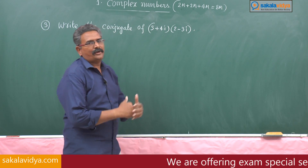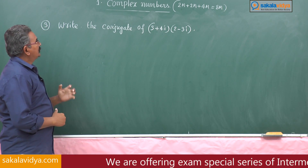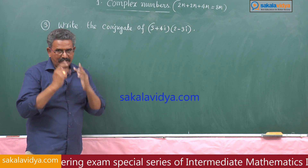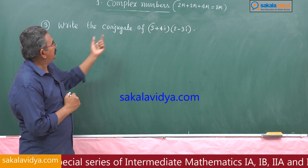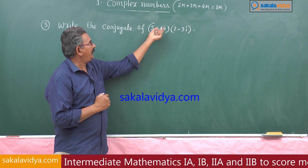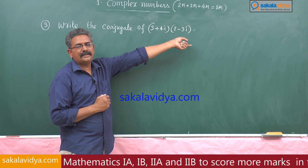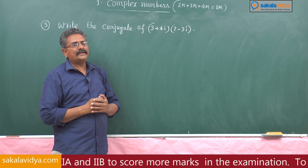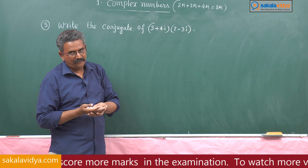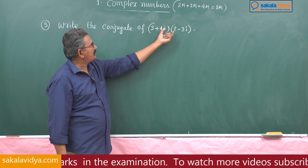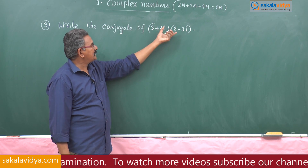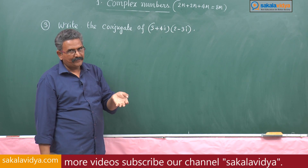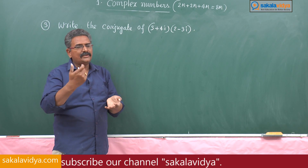How to solve this problem? This problem can be done in two ways. First, write the conjugate of (3+4i) and (2-3i) separately and multiply them to get the conjugate of the given expression. Otherwise, first put the given complex number in the form a + bi, then write its conjugate.